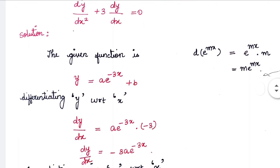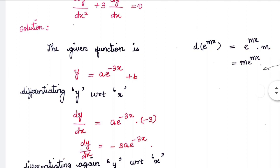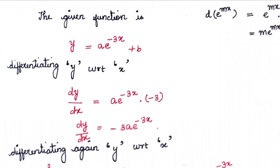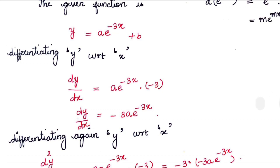Now let us get into the solution of the problem. The function given is y = ae^(-3x) + b. Differentiating y with respect to x: a is a constant so it stays, the differential of e^(-3x) gives e^(-3x), and differentiating the power (-3x) gives -3. The constant b differentiates to 0. So dy/dx = -3a·e^(-3x).